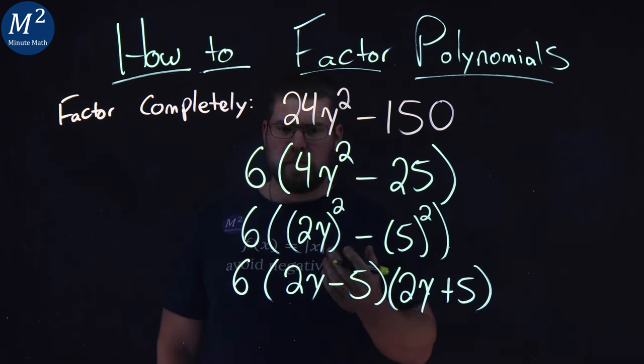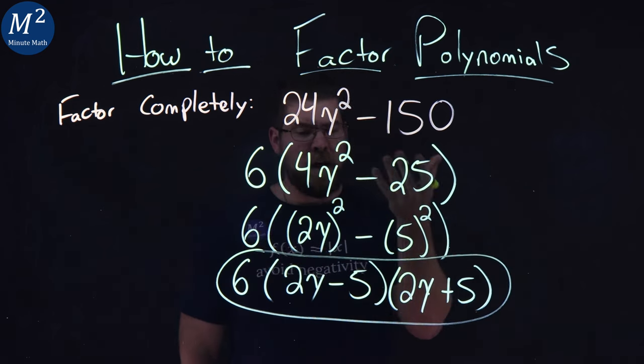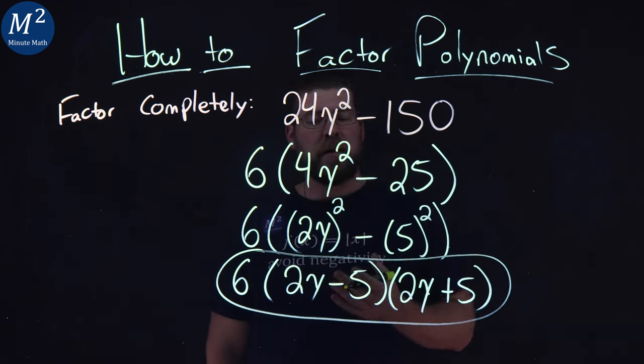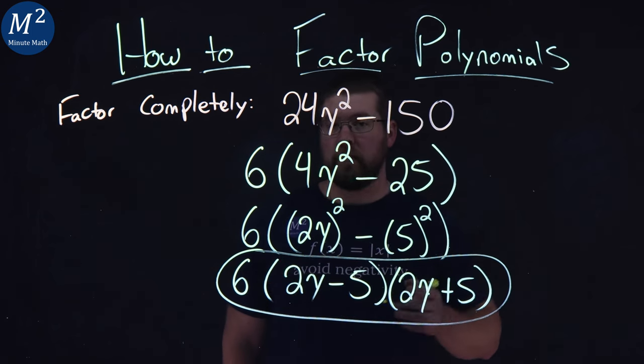So you kind of do a quick check there to see if you did it right. Either way, I've got my answer. I don't see any way that I can simplify this anymore or factor it anymore. And we have a final answer of 6 times 2y minus 5 times 2y plus 5.